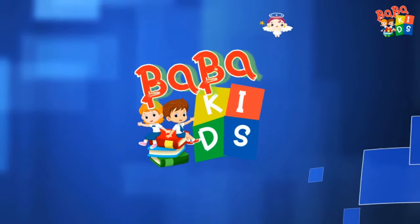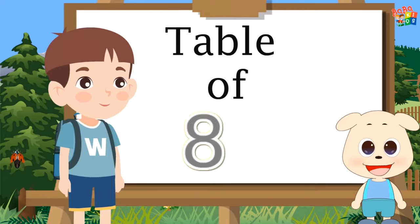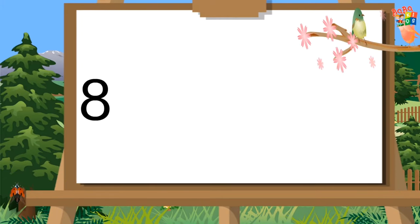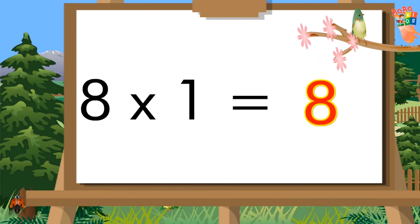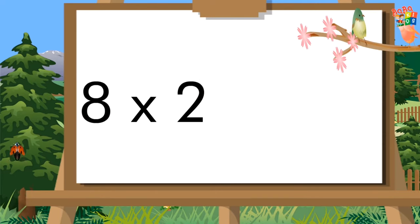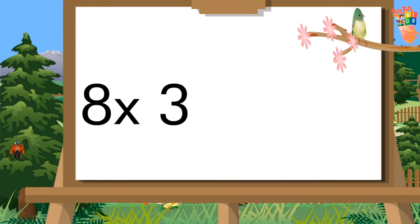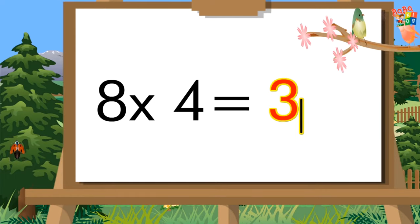Baba Kids Table of Eight: 8x1 is 8, 8x2 is 16, 8x3 is 24, 8x4 is